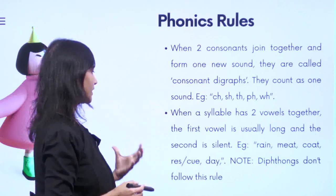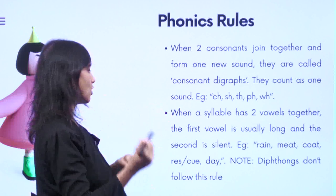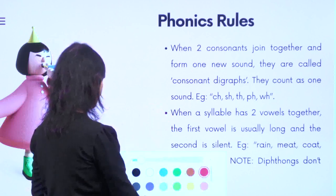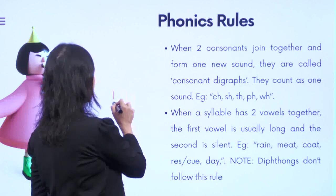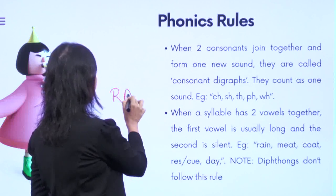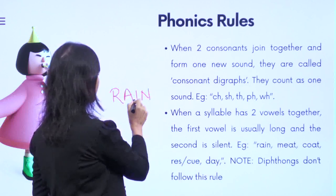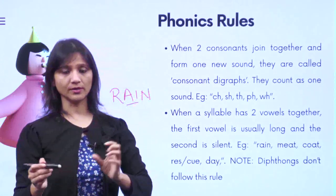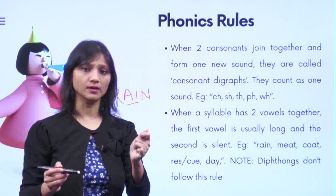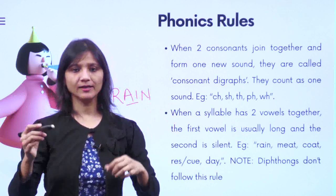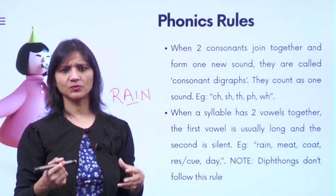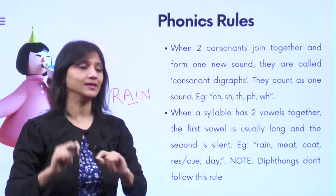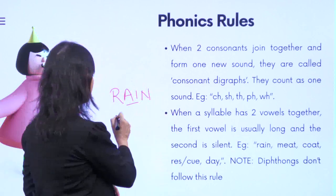Rule nine: when a syllable has two vowels together, the first vowel is usually long and the second is silent. For example, 'rain' — two vowels A and I are together. The first one, A, makes its long sound, and I is silent. We have a song: 'when two vowels go walking, the first one does the talking.' Another example is 'meet'.